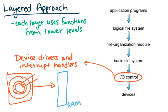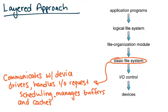Most file systems are structured in a layered fashion, where each layer uses functions from the lower levels. Application programs use functions from the logical file system, and so on down the stack. The IO control layer is where all the device drivers and interrupt handlers sit — this is what facilitates the transfer of data between the disk and your RAM.